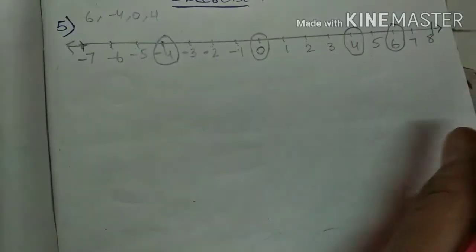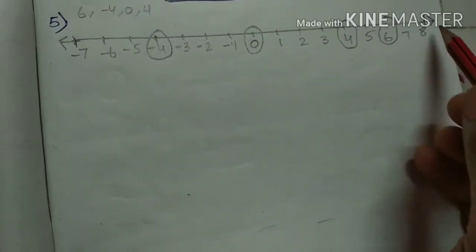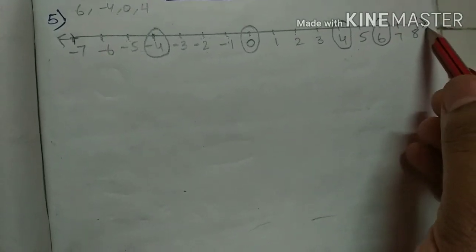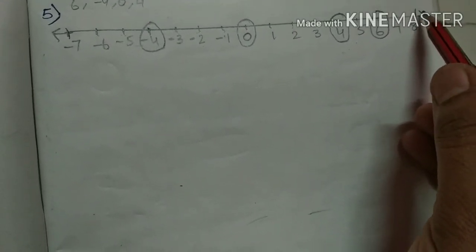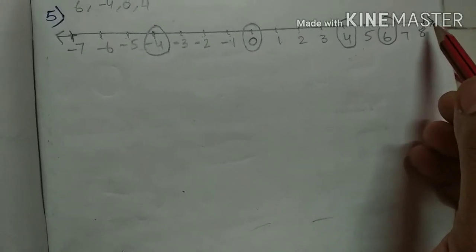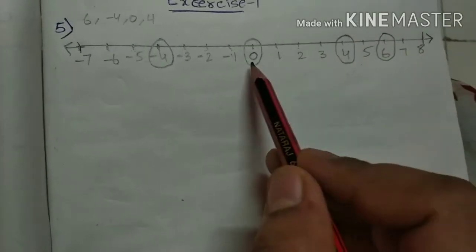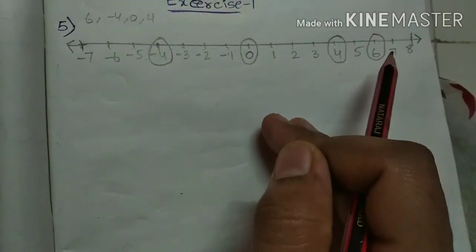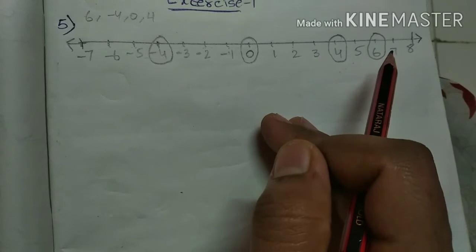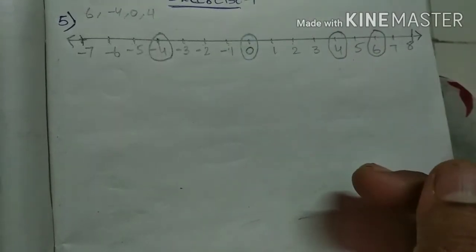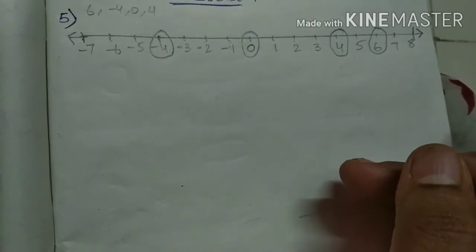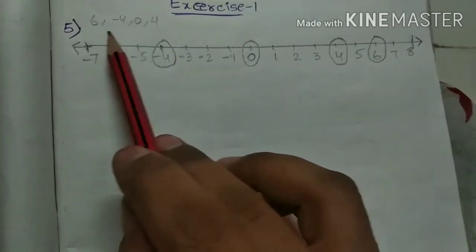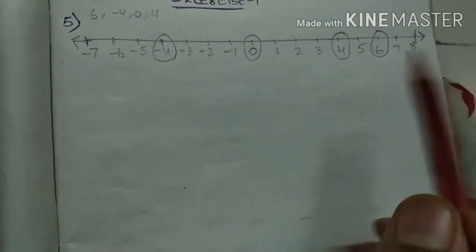It is very easy. First draw one line and keep arrows on both sides — don't keep endpoints like dots, only arrows on both sides. Afterwards write positive integers on the right side of 0, and negative integers on the left side of 0, and mark the given integers by circling them.